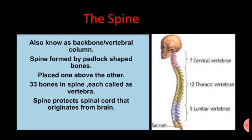The spine is formed by padlock-shaped bones placed straight one above the other. There are altogether 33 bones in the spine, each called a vertebra. These bones are arranged one above the other flexibly. The spine protects the spinal cord that originates from the brain.